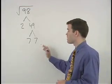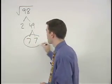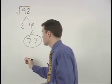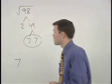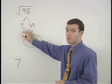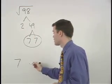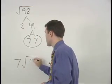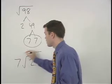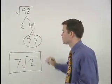So here since our 7's pair up, a 7 will come out of the radical. Since the 2 does not pair up it stays inside the radical. And our answer is 7 root 2.